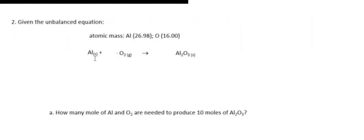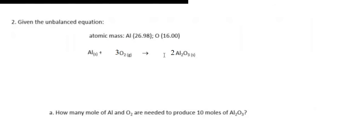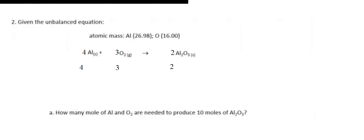Because the equation is not balanced, we need to balance it. We put number 2 here, so 2 multiplied with 3 gives 6 oxygens. On the other side we have 2 oxygens, so we put number 3: 3 multiplied by 2 equals 6. Then 2 multiplied by 2 gives 4, so we put 4. After balancing, the equation is 4Al + 3O₂ → 2Al₂O₃.